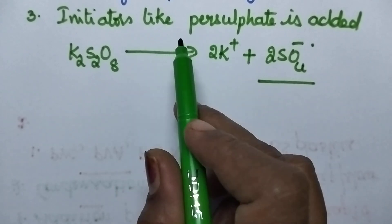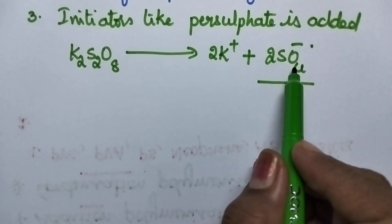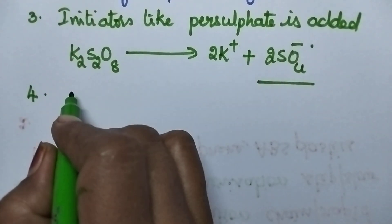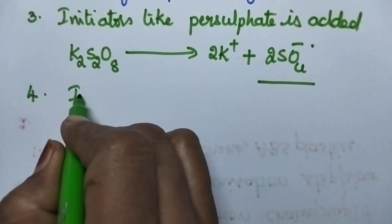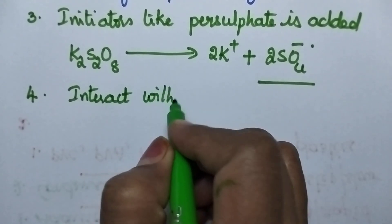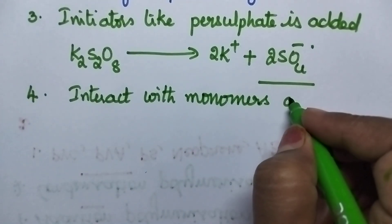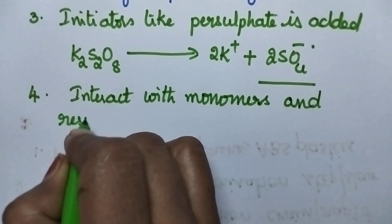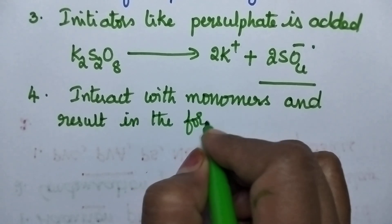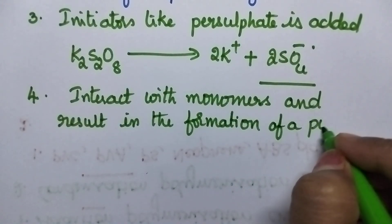Whenever persulfate is added to the monomer, it results in the formation of sulfate ion radicals. And always, these ion radicals will interact with monomers and result in the formation of a polymer.